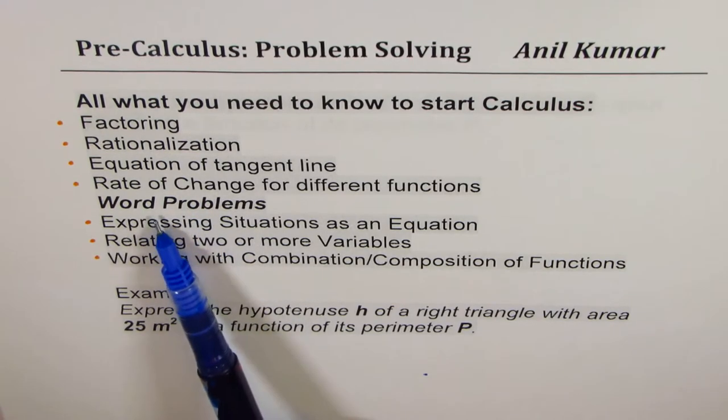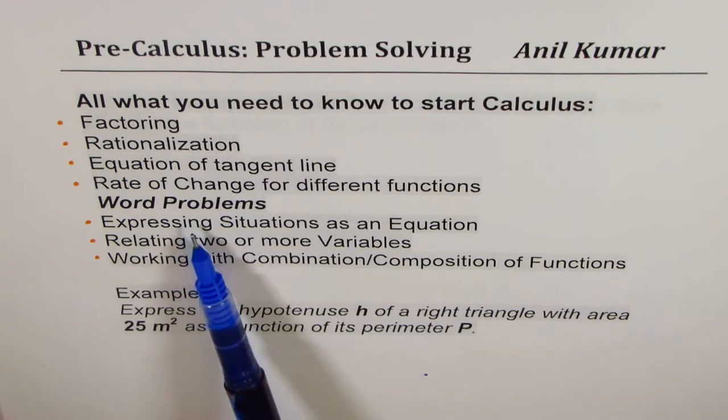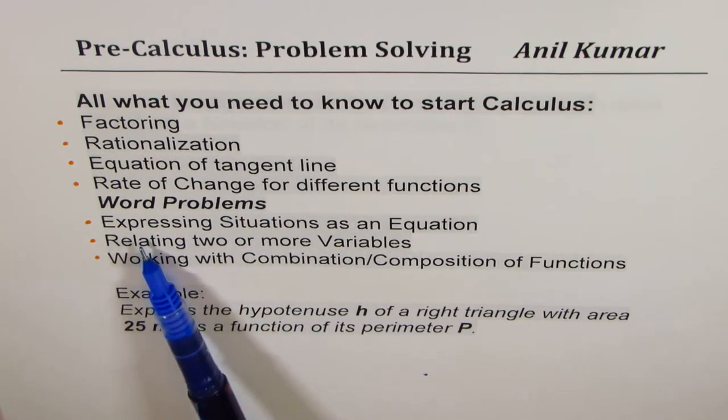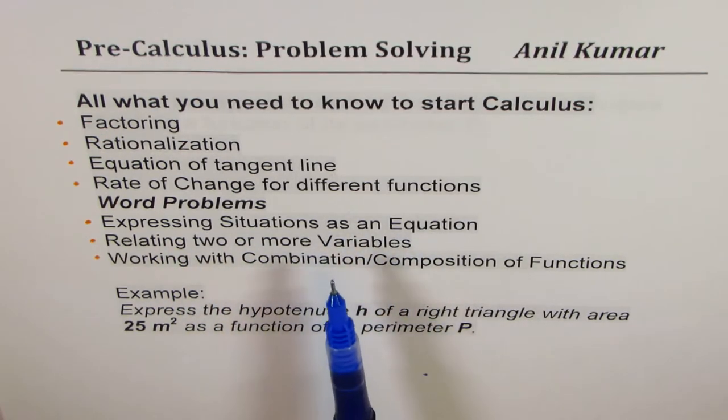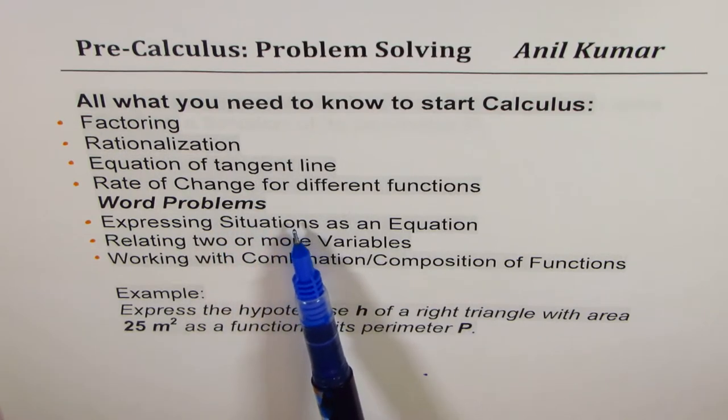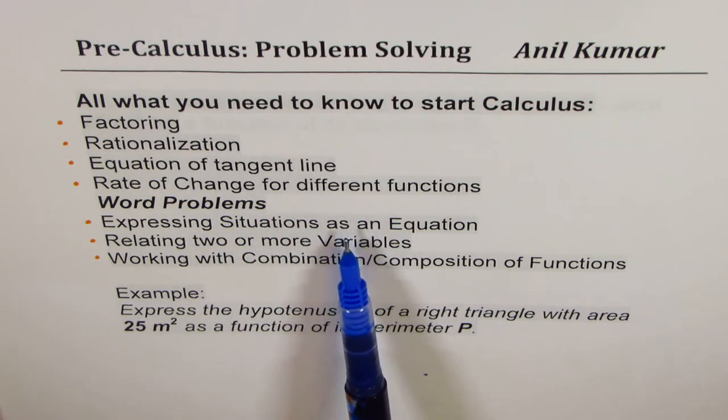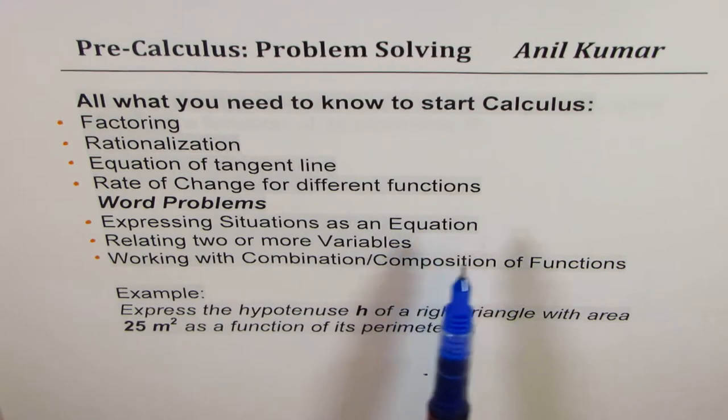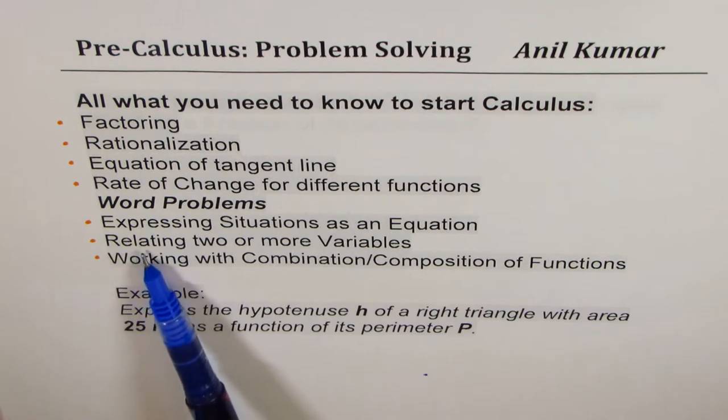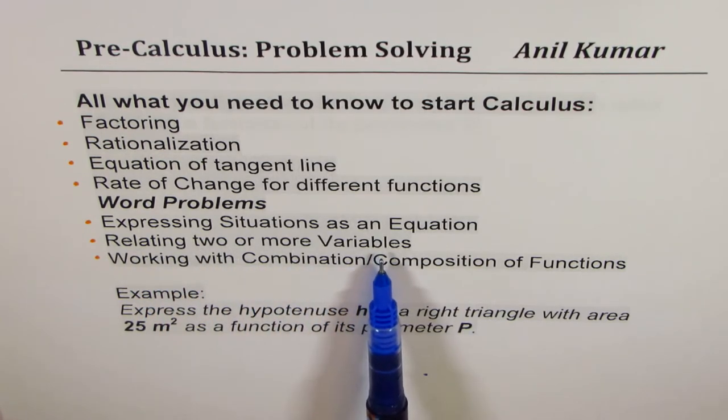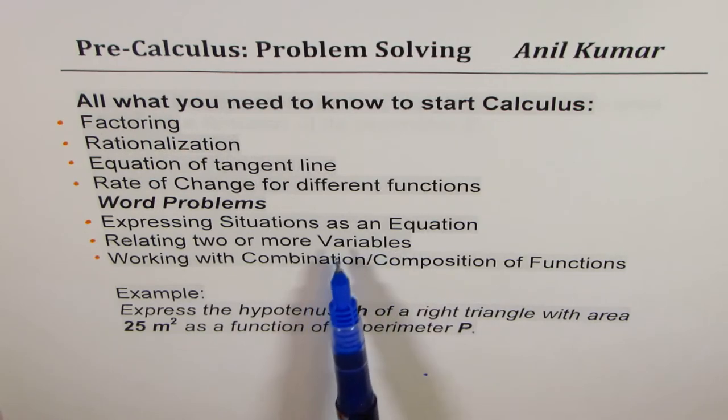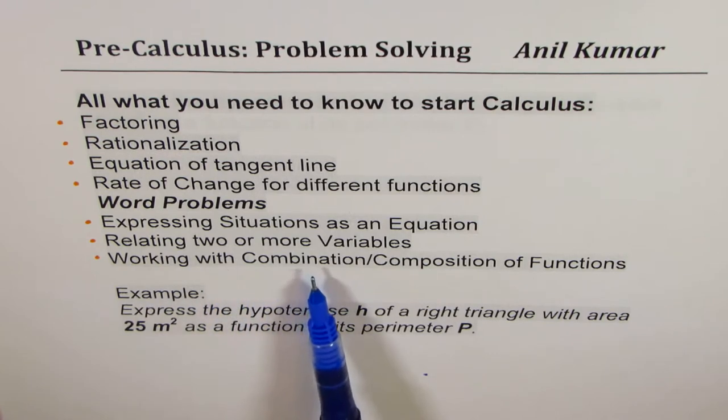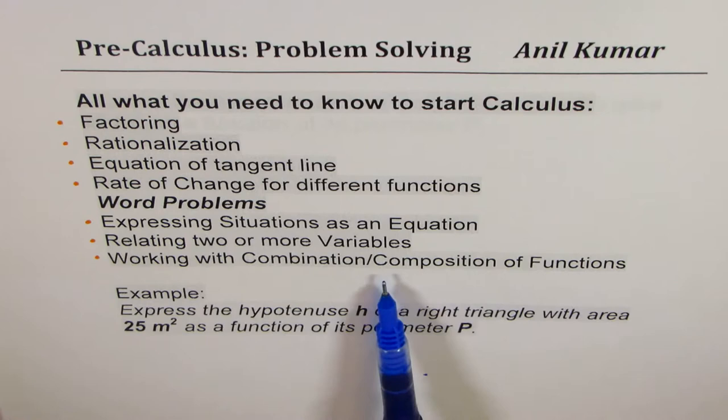Now comes the next section, which is Word Problems. I've tried to summarize it into three categories. The first one is expressing situations as an equation. Normally, you will be expressing situations in multiple equations, then relating them. So it's a good idea to see how you can relate and write them as single equation and single variable relating others. What I really mean is relating two or more variables in functions. We could write the same thing as working with combination or composition of functions. So that's the beauty which needs to be perfected when you work with calculus.